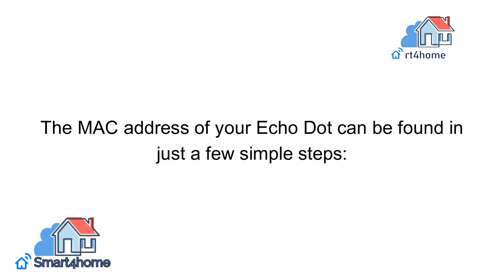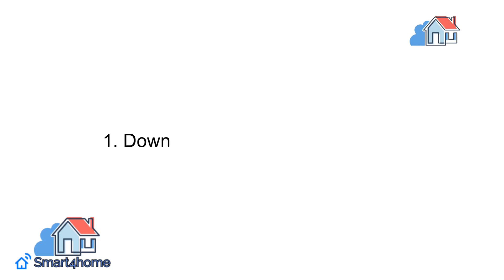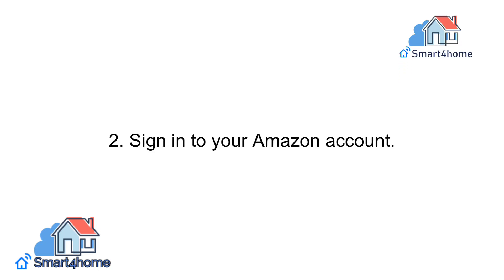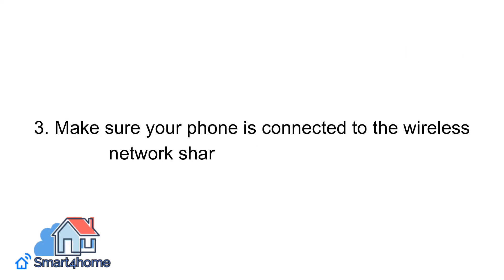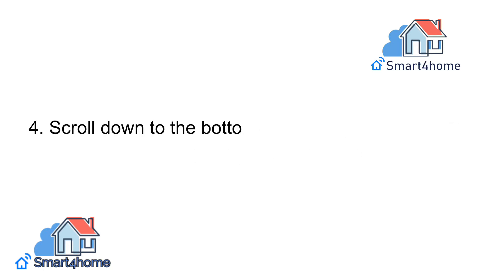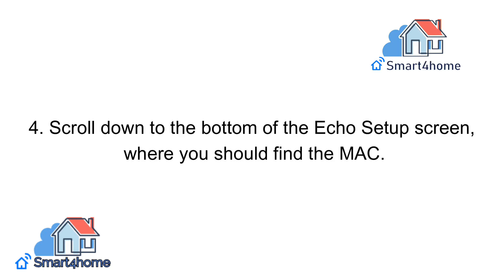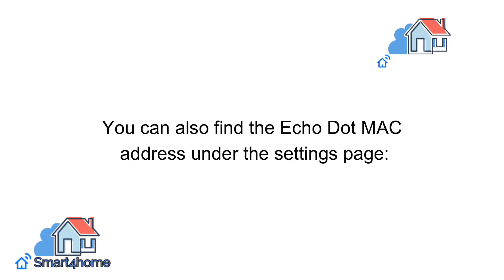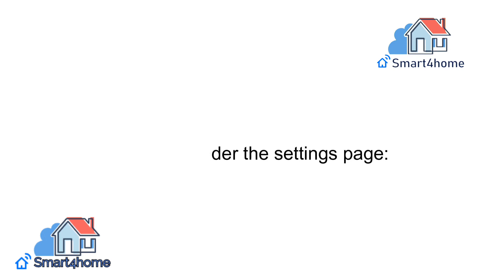The MAC address of your Echo Dot can be found in just a few simple steps. 1. Download the Amazon Alexa app. 2. Sign in to your Amazon account. 3. Make sure your phone is connected to the wireless network shared with your Echo Dot. 4. Scroll down to the bottom of the Echo setup screen, where you should find the MAC. You can also find the Echo Dot MAC address under the settings page.